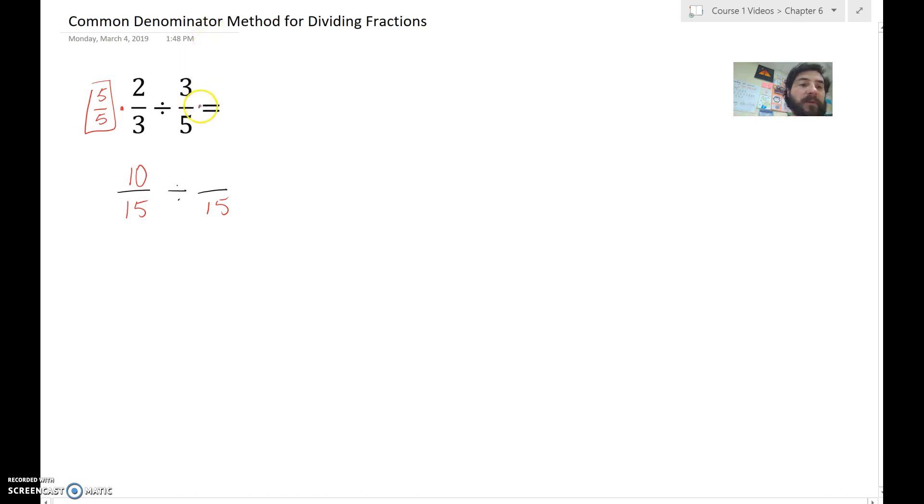And then if I think, well, what could I multiply over here? So 5 times what is 15? That would be 3. So if I multiply this fraction by 3 thirds, I will have an equivalent fraction. So 3 fifths is equal to 9 fifteens.